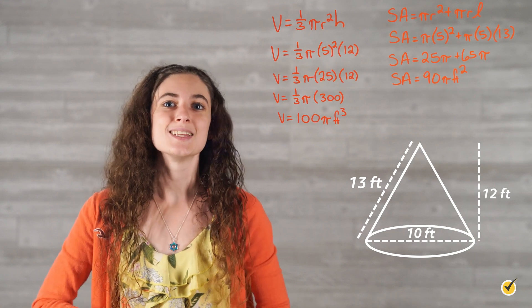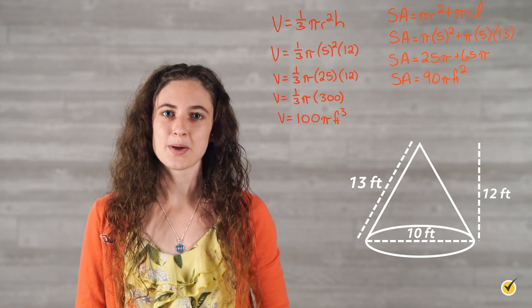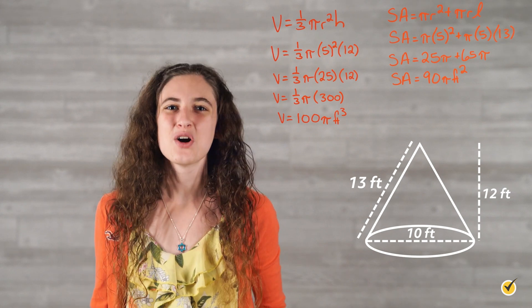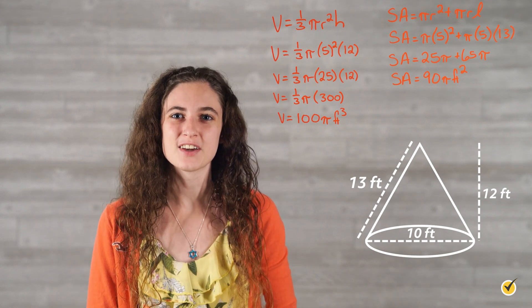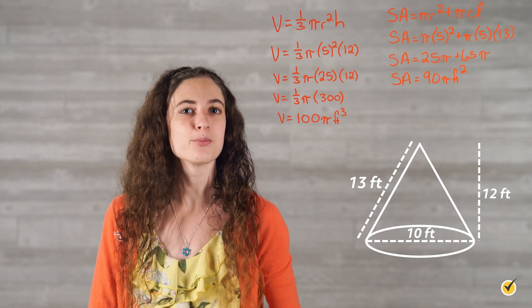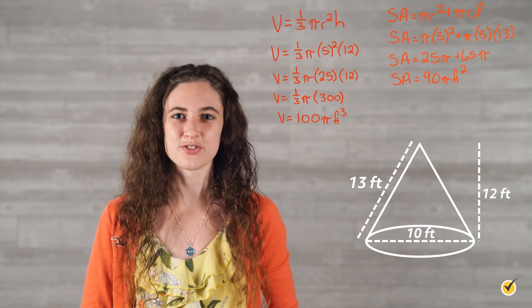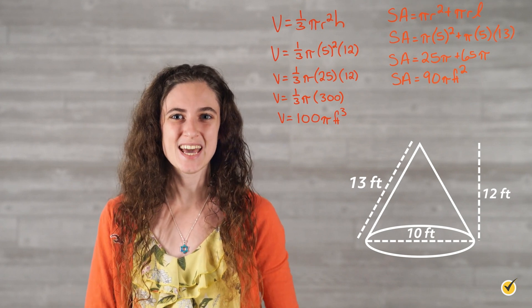So we see that we would need 90 pi square feet of wrapping paper to cover this thing. I hope that this has given you a greater understanding of cones and has made you confident in your ability to find any cone's volume and surface area. Thanks for watching and happy studying!